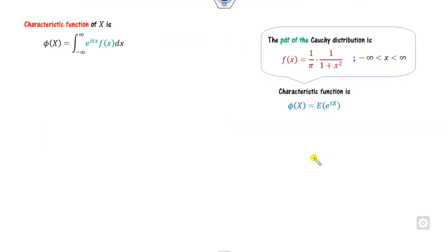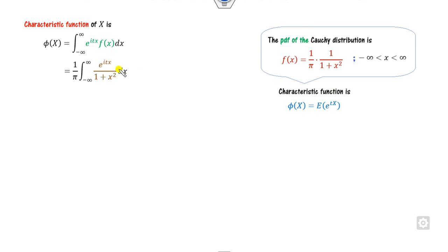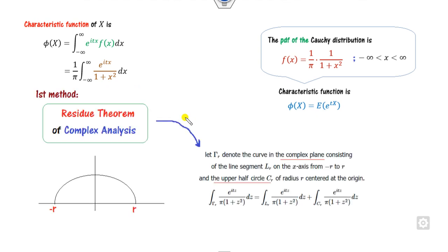Our target is to write the characteristic function for this probability density function f(x). As per the definition of the characteristic function, we substitute the value of f(x). The constant 1/pi can be taken outside. The major challenge is how to solve this integration, because of the exponential and the many singularities in this complex part. The singularities are at plus and minus iota.